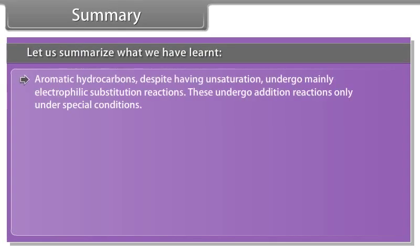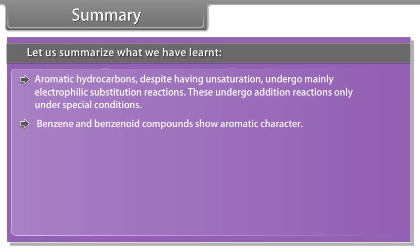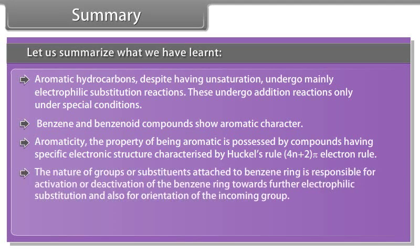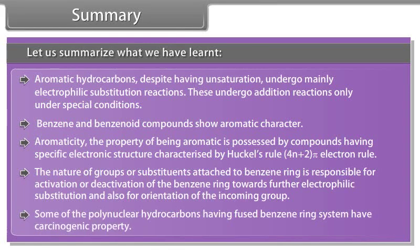Summary. Aromatic hydrocarbons, despite having unsaturation, undergo mainly electrophilic substitution reactions and addition reactions only under special conditions. Benzene and benzenoid compounds show aromatic character. Aromaticity — the property of being aromatic — is possessed by compounds having a specific electronic structure characterized by Hückel's rule (4N+2 pi electrons). The nature of groups or substituents attached to the benzene ring is responsible for activation or deactivation of the ring towards further electrophilic substitution, and also for orientation of the incoming group. Some polynuclear hydrocarbons having fused benzene ring systems have carcinogenic properties.